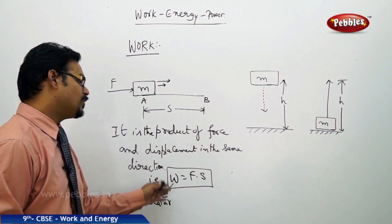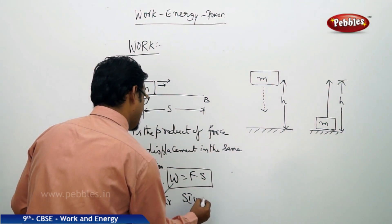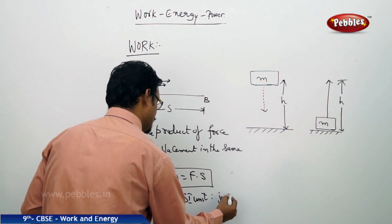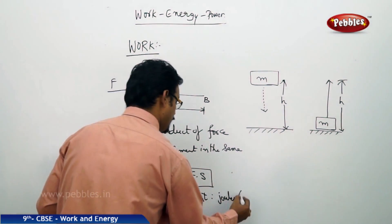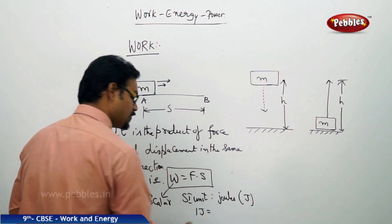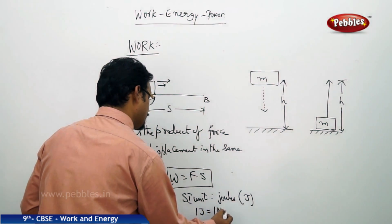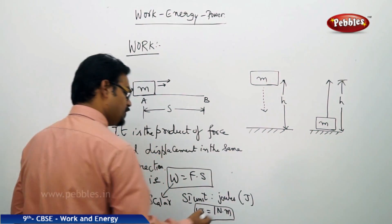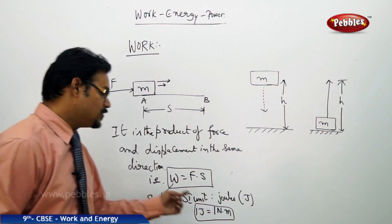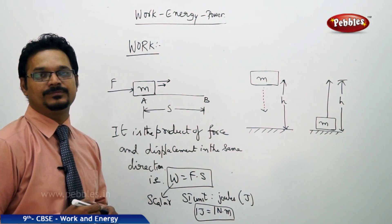So the formula is W equals to F S. Now if you ask me, the SI unit of work is joules, or you can write capital J. But one joule equals to F into S, so one Newton into meter. So work unit can be joule or also you can say Newton meter. But if you ask me the SI unit specifically, it is joule.